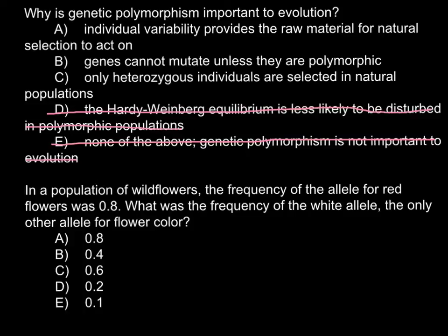Answer C: only heterozygous individuals are selected in natural populations. This is also incorrect, because homozygous individuals are also selected in natural populations. Sometimes homozygous recessive or dominant individuals can be better fit to the environment. Heterozygosity does affect how the overall population is adapted to the environment, but the word 'only' does not allow this to be the correct answer, because not only heterozygous — homozygous and heterozygous are relatively equal in being affected by the environment. So we cross it out.